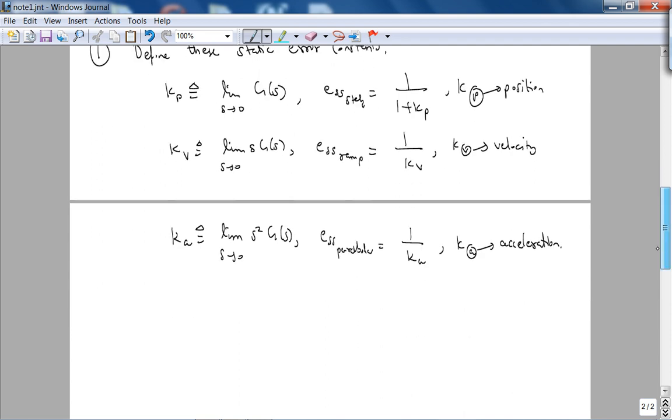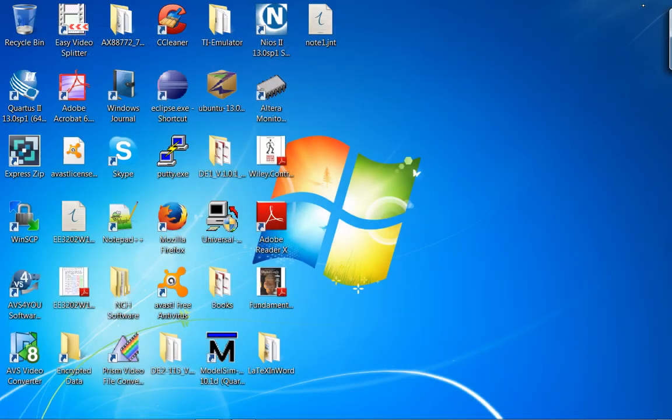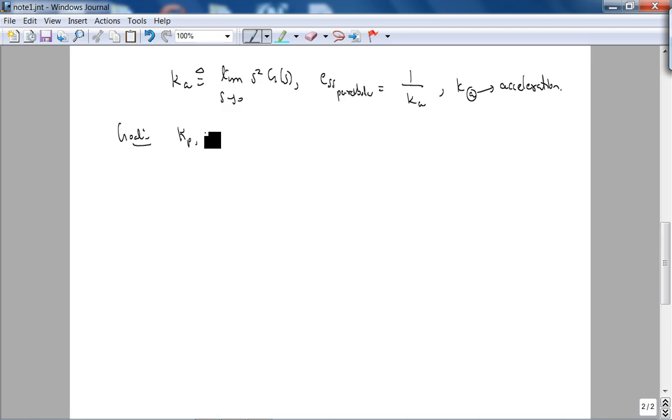And finally the acceleration is defined as the static error constant, limit as s goes to 0 of s²*G(s). The steady state error due to parabolic inputs is 1/Ka, and the a here is acceleration. So the goal basically in our design is to ideally make Kp, Kv, Ka tend to infinity because we want the steady state error to go to 0.